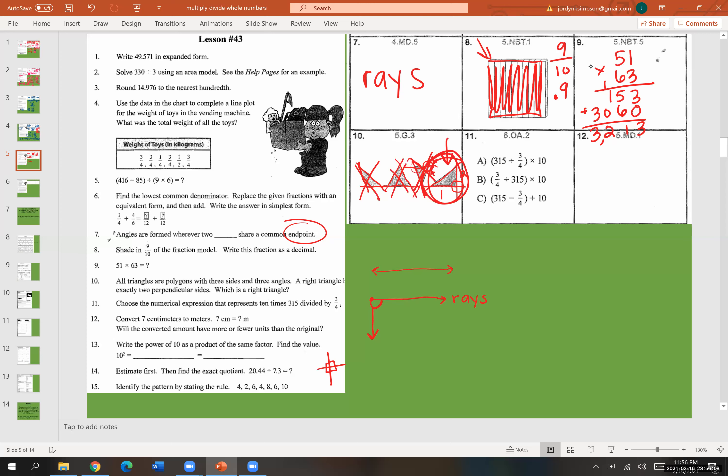Number eleven, choose a numerical expression that represents 10 times 315 divided by three-fourths. So they tried to trick you here because they put one of the numbers in word forms. They put a 10 right here. So 10 times 315 divided by three-fourths. So we want to do the 315 divided by three-fourths first. So A has 315 divided by three-fourths, so we'll wait for it. This has three-fourths divided by 315. That is not what it said. It wants the 315 first. So B would be a no-go. C isn't even dividing. It's subtracting. So that's a no-go. But then you also need to make sure that it has the 10 times. And it does. It's multiplying by 10. So the correct answer is A.